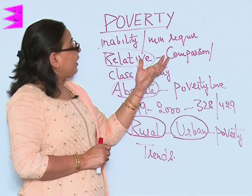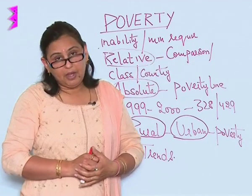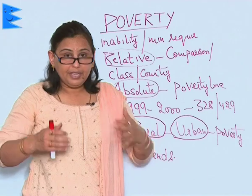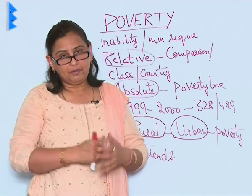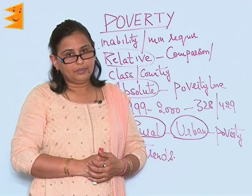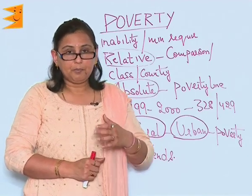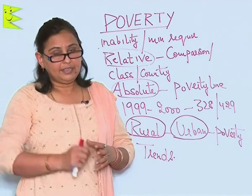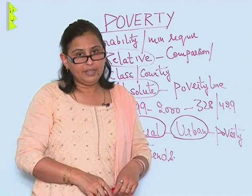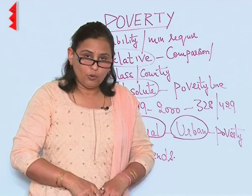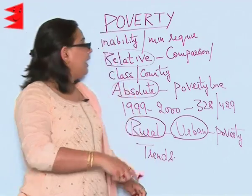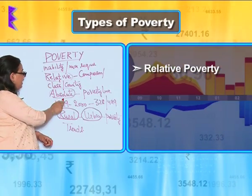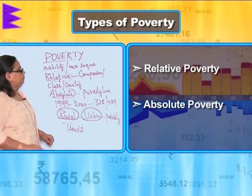Now, if there is poverty, then how many kinds of poverty are there? When we measure poverty, there are two kinds: relative poverty and absolute poverty.